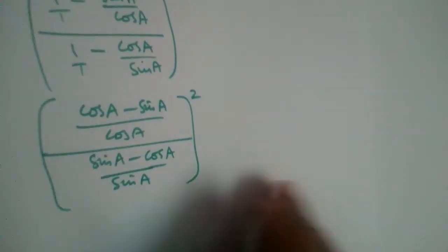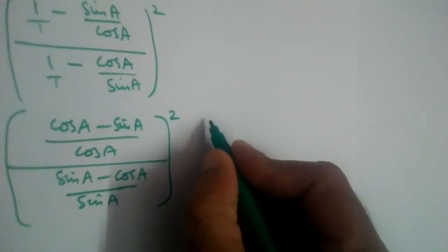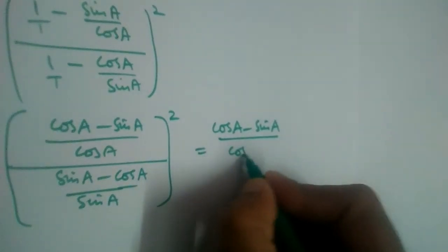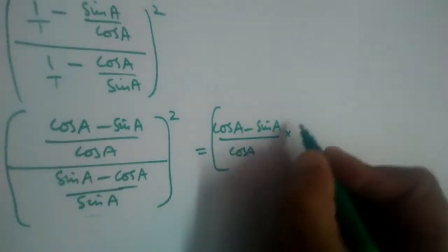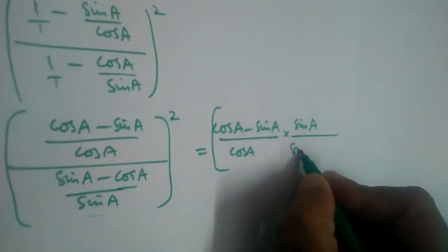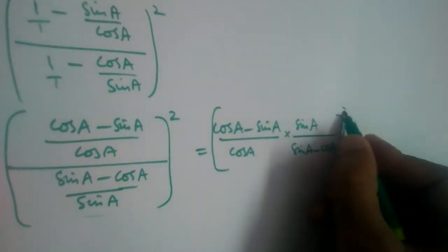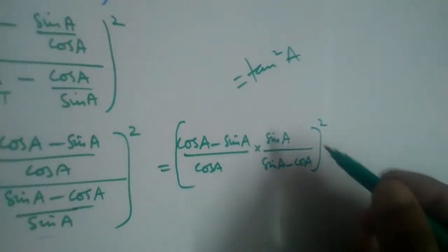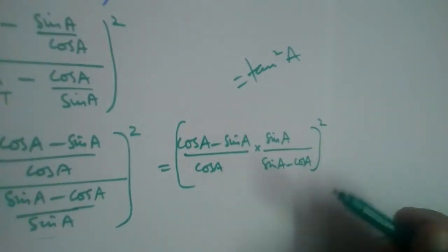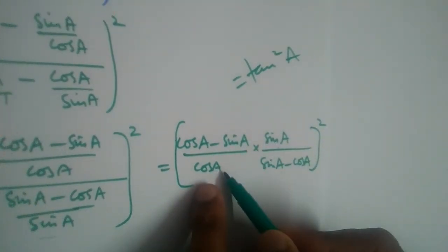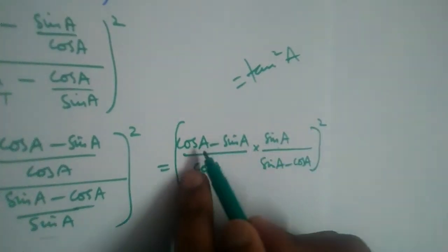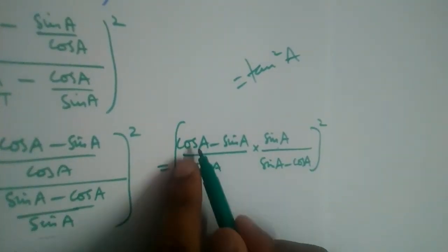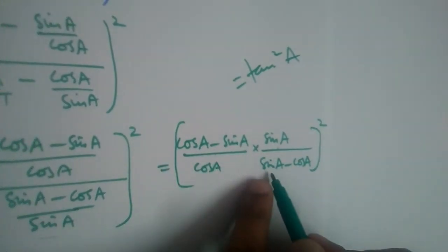We have division of a division, so this becomes (cos a − sin a) / cos a multiplied by the reciprocal sin a / (sin a − cos a), whole square. We need this to equal tan²a, and we can see we have sin/cos here, but we need to cancel the remaining term.